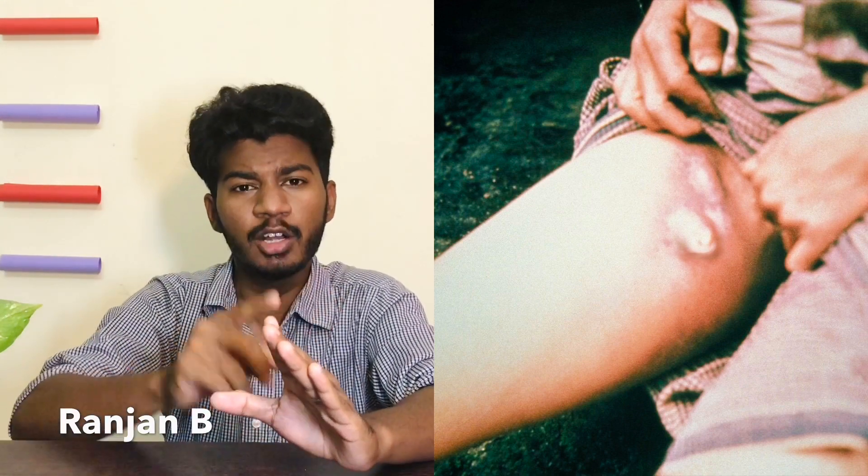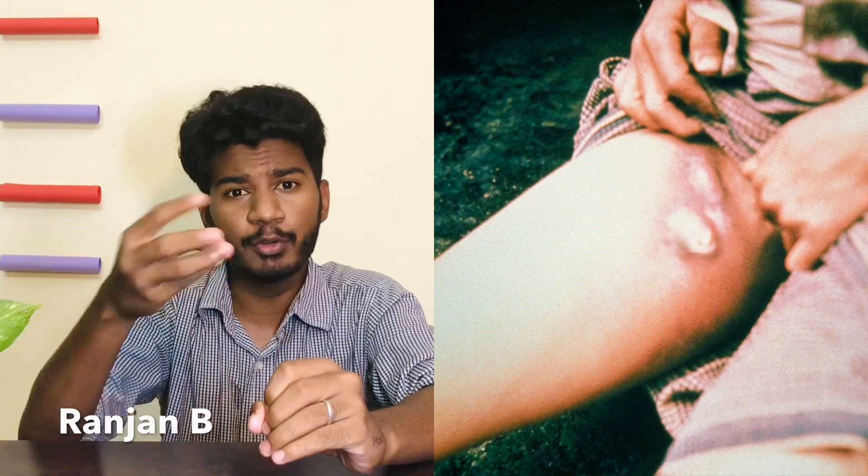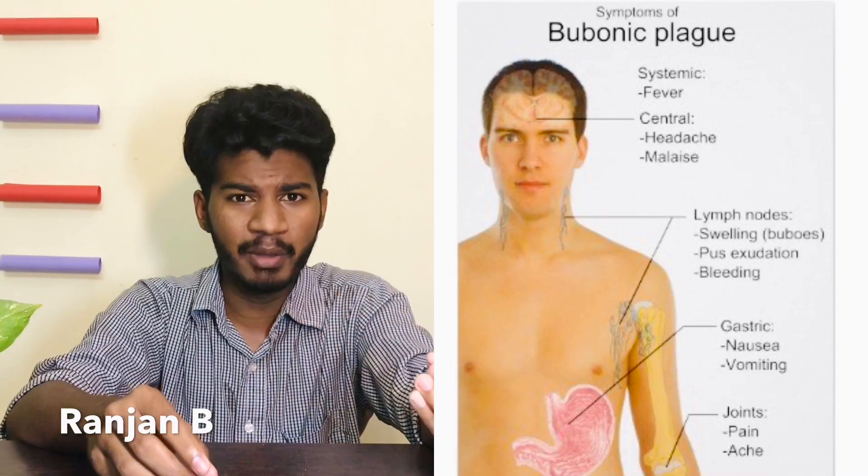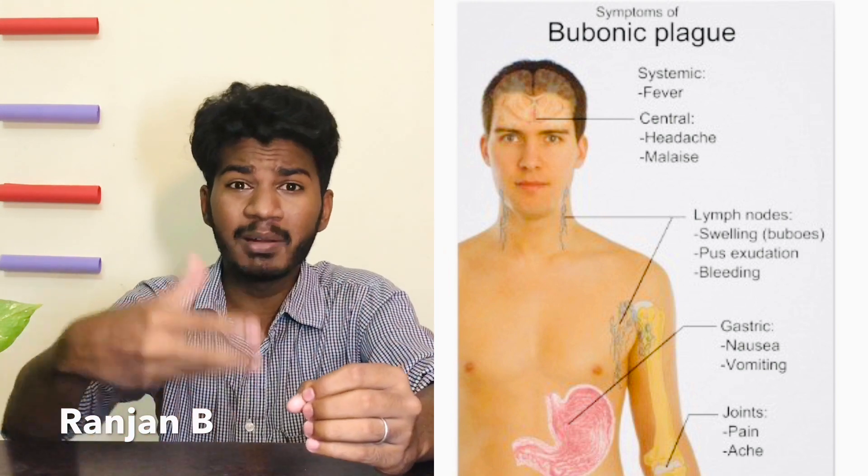This is the first stage — Bubonic Plague. If affected, the lymph nodes swell into a bulb form. The bacteria then spreads to all organs, leading to an advanced stage called Septicemic Plague, which is very rare.